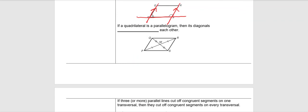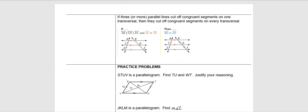Next theorem: if a quadrilateral is a parallelogram, then its diagonals bisect each other. That's not to say the diagonals are congruent because as you can see here in this picture, diagonal PR is definitely much longer than diagonal QS, but the diagonals do bisect each other.